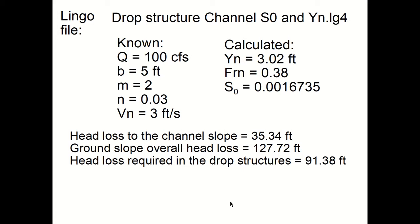The Froude number is 0.38 and the slope at which the velocity would be equal to 3 feet per second. There's way too many decimal places but I just thought I'd show you the entire number. These quantities are calculated from the Lingo file drop structure channel S0 and Yn.lg4. Also, this particular Lingo file will calculate the head loss to the channel slope and then the ground slope overall head loss. So if you subtract those, you get the head loss required in the drop structures.